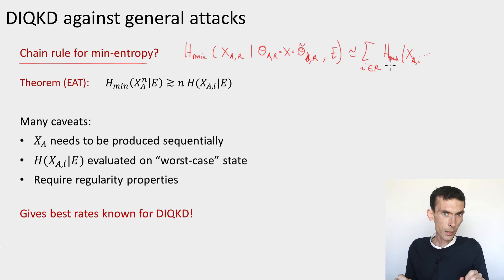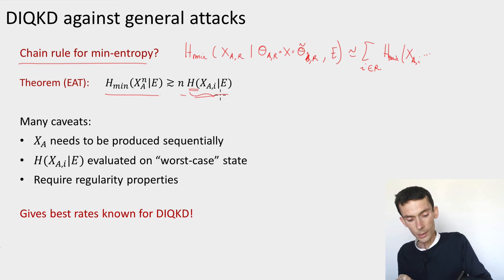So what does the theorem say? It tells us what we want. It tells us that the total of n copies of this output of Alice's, so imagine that these are the n rounds that are used for the raw key, this is going to be n times how much you get in one round. Again, I could rewrite this in the same way as I did here. I could just say this is the sum over all i. There's one small difference here, which is that I didn't put a min. This is just the standard conditional von Neumann entropy, which is actually better because this quantity is going to be bigger than the min-entropy.